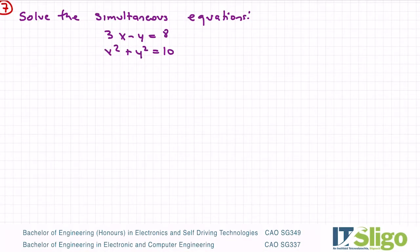Question 7 in this revision block: solve the simultaneous equations 3x minus y equals 8, x squared plus y squared equals 10. One of the types of simultaneous equations that's on the Leaving Cert course is a circle and a line.